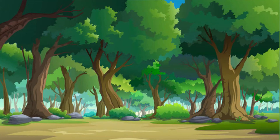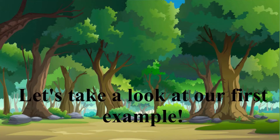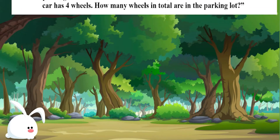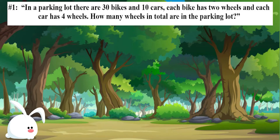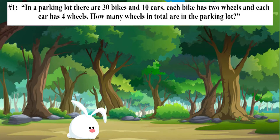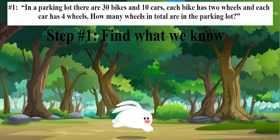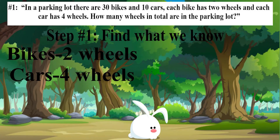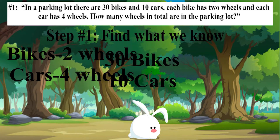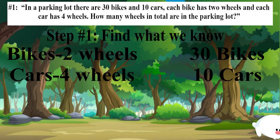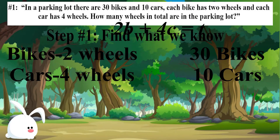Let's go ahead and take a look at our first example. In a parking lot, there are 30 bikes and 10 cars. Each bike has 2 wheels and each car has 4 wheels. How many wheels in total are in the parking lot? Let's take a moment and realize what this question is asking us — how many wheels in total are in the parking lot. For our first step, we're going to find out what we know about the wheels. Each bike has 2 wheels and each car has 4 wheels, and there are 30 bikes and 10 cars. Knowing this, we are able to make an equation that will help us solve.